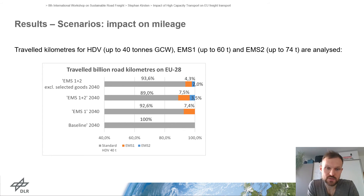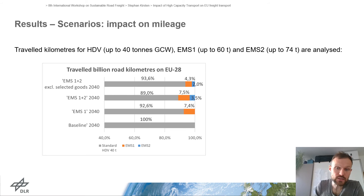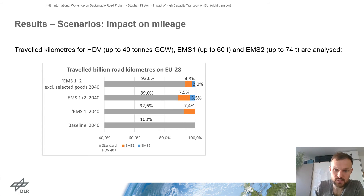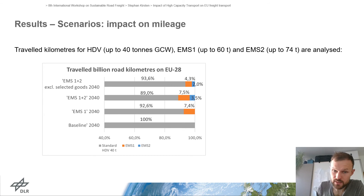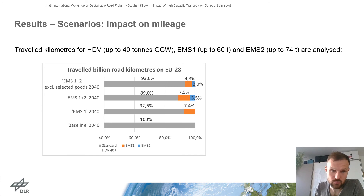Besides transport performance, we calculated traveled kilometers for HDV, EMS1, and EMS2, showing traveled billion road kilometers on EU28 for each scenario. With the baseline scenario at 100%, EMS1 accounts for 7.4% of traveled kilometers in the EMS1 scenario, and EMS2 reaches 3.5% in the EMS1 plus EMS2 scenario. With exclusion of commodities in the last scenario, both percentages reduce to 4.3% for EMS1 and 2% for EMS2.